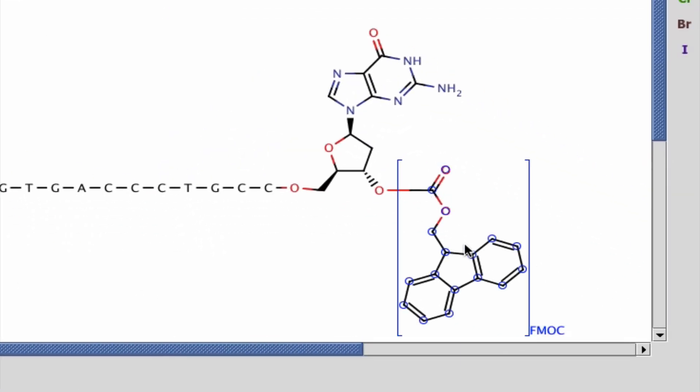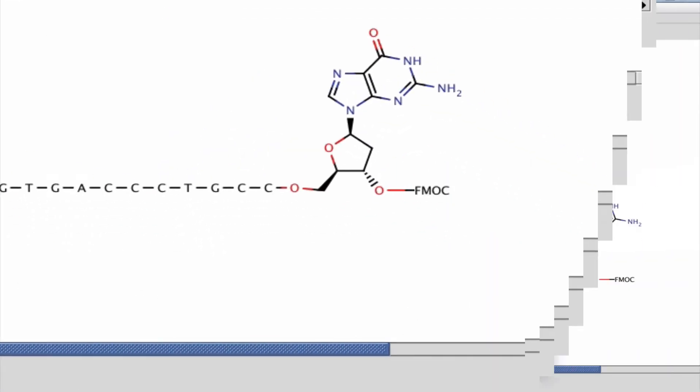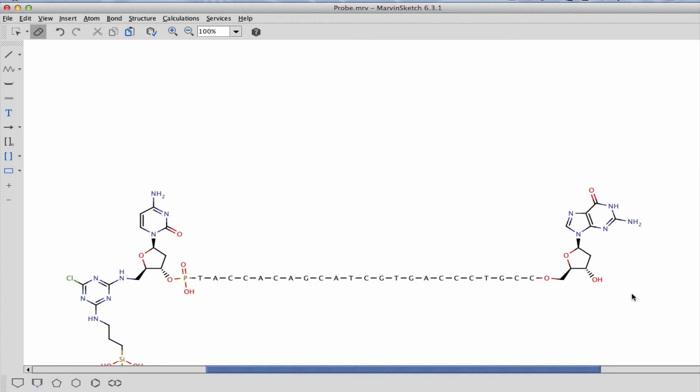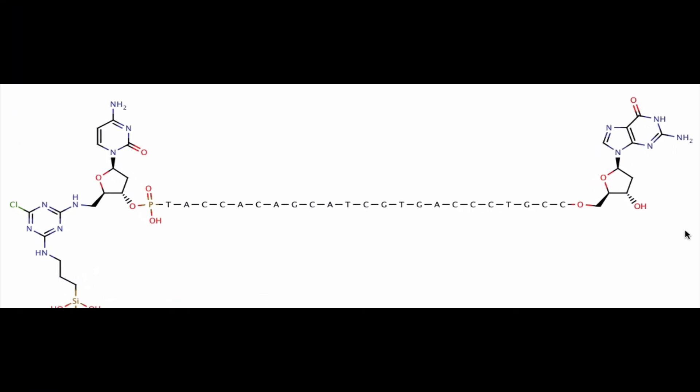Let's get that FMOC group. Go back here. We saw that that FMOC group was eventually removed after attachment. So there is the sequence that's going to be used to probe for the presence of a SNP associated with redheads.